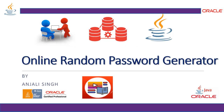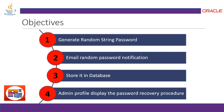In this practice project — an Online Random Password Generator — the objectives are: 1) Generate a random string password, 2) Email notification for the random password, and 3) Store the user ID and password in a database. There is also an admin mode where we can display the password for recovery procedures.